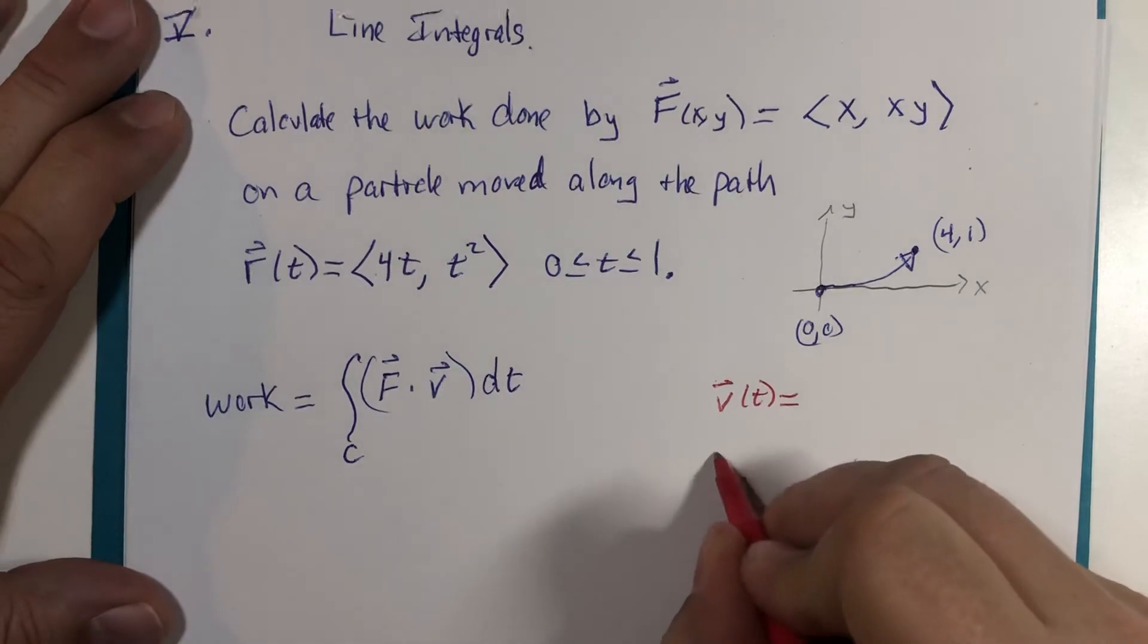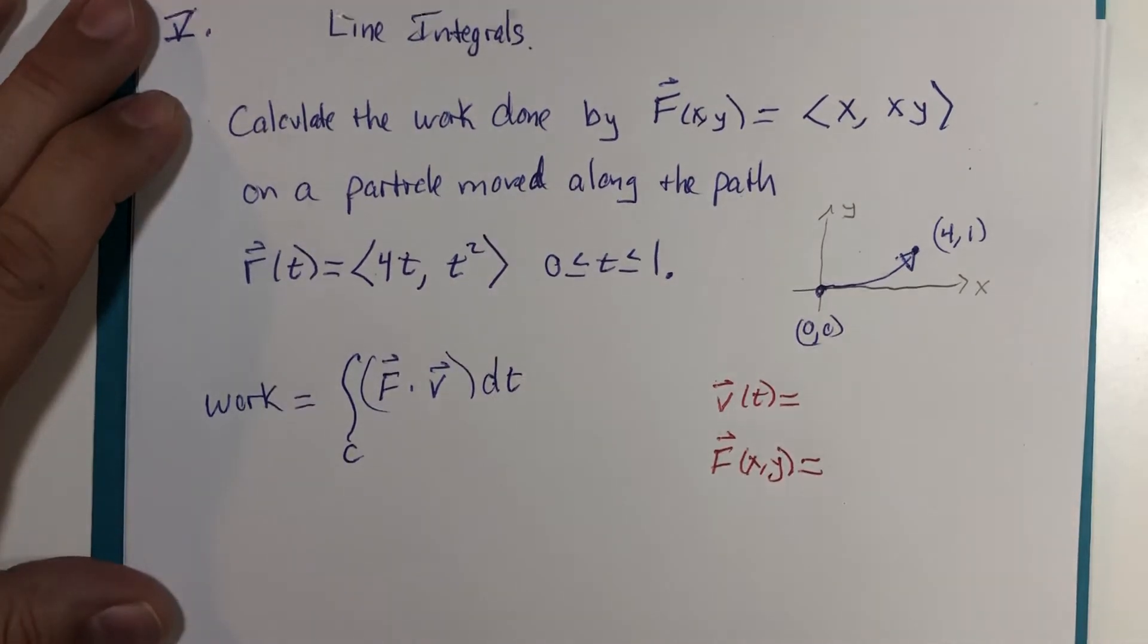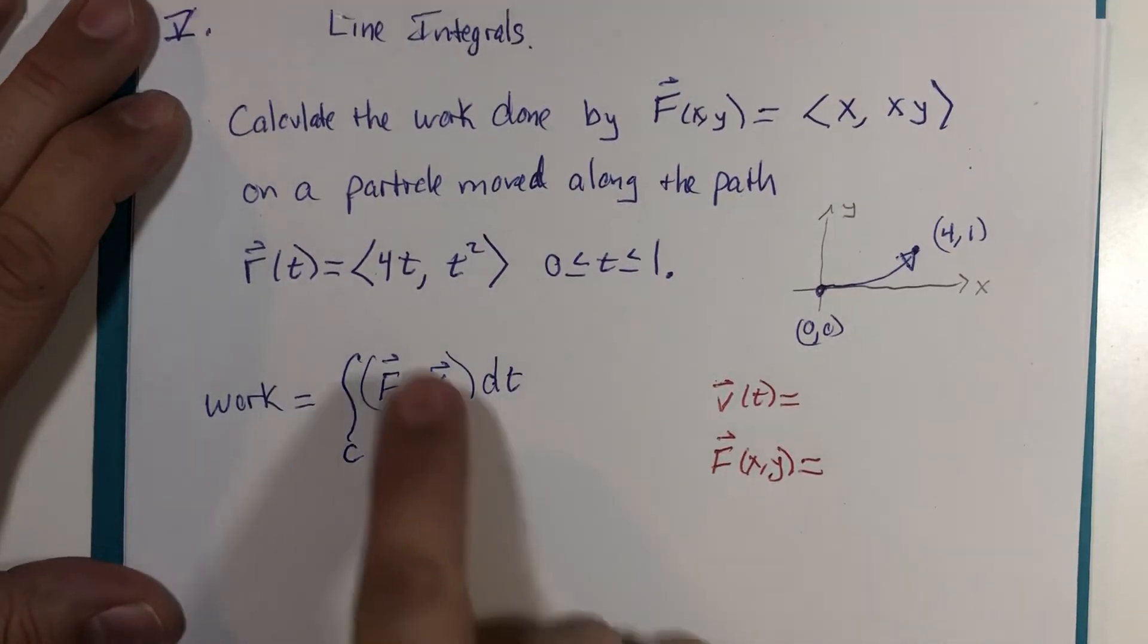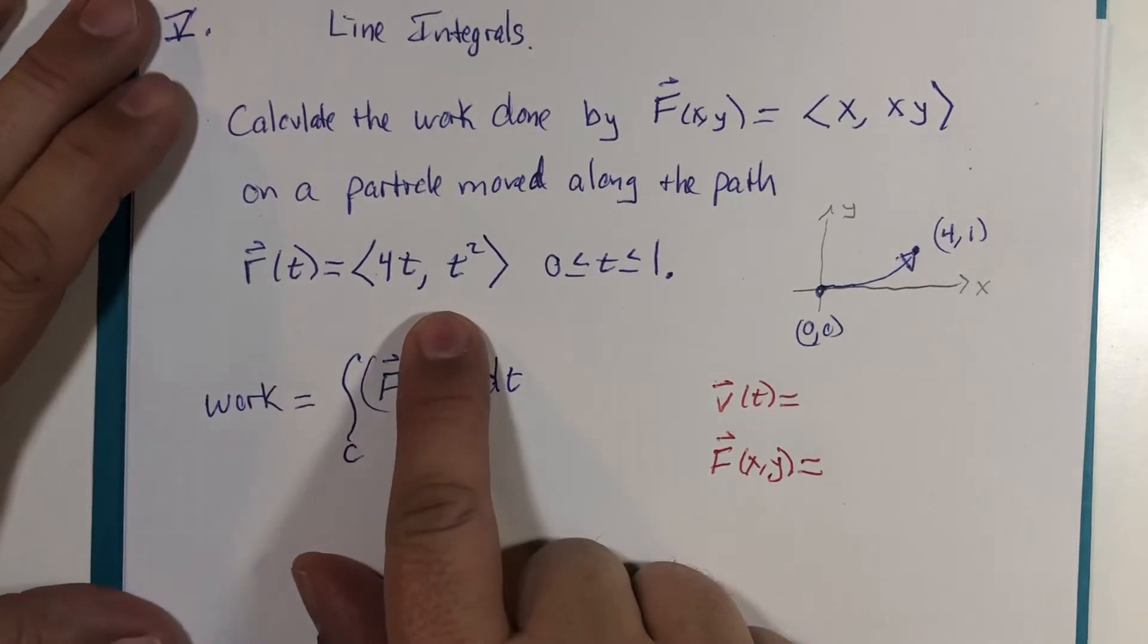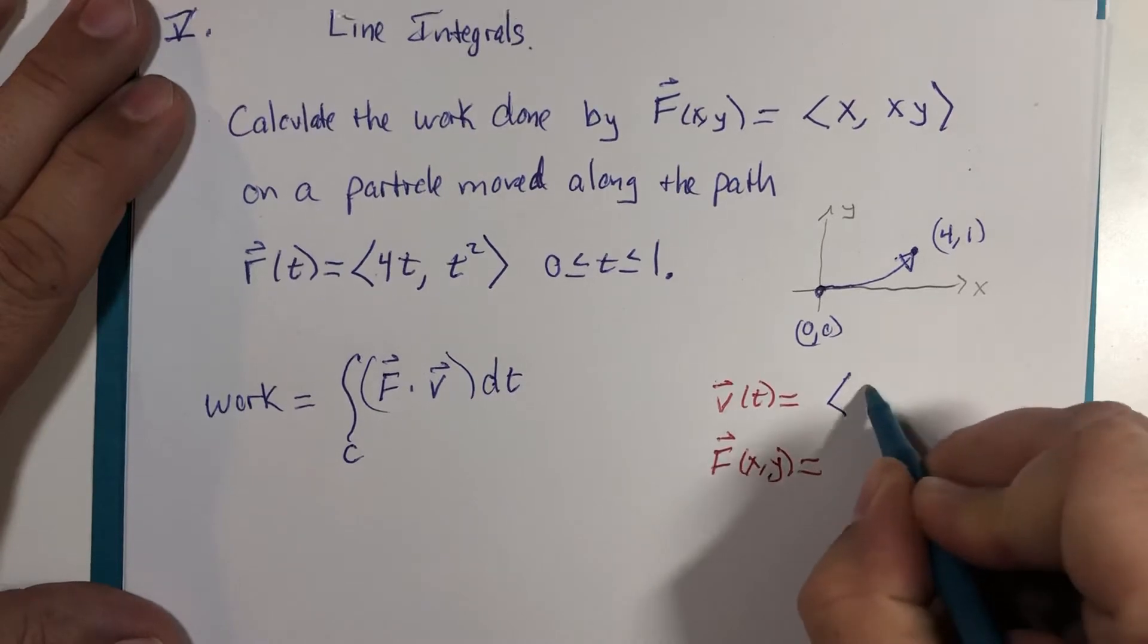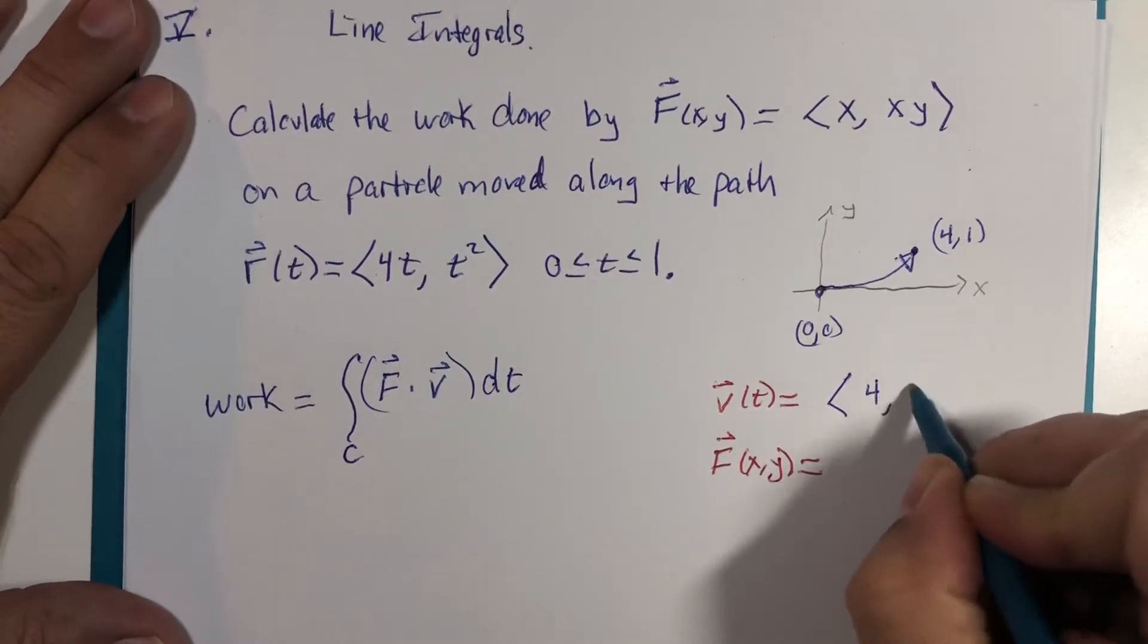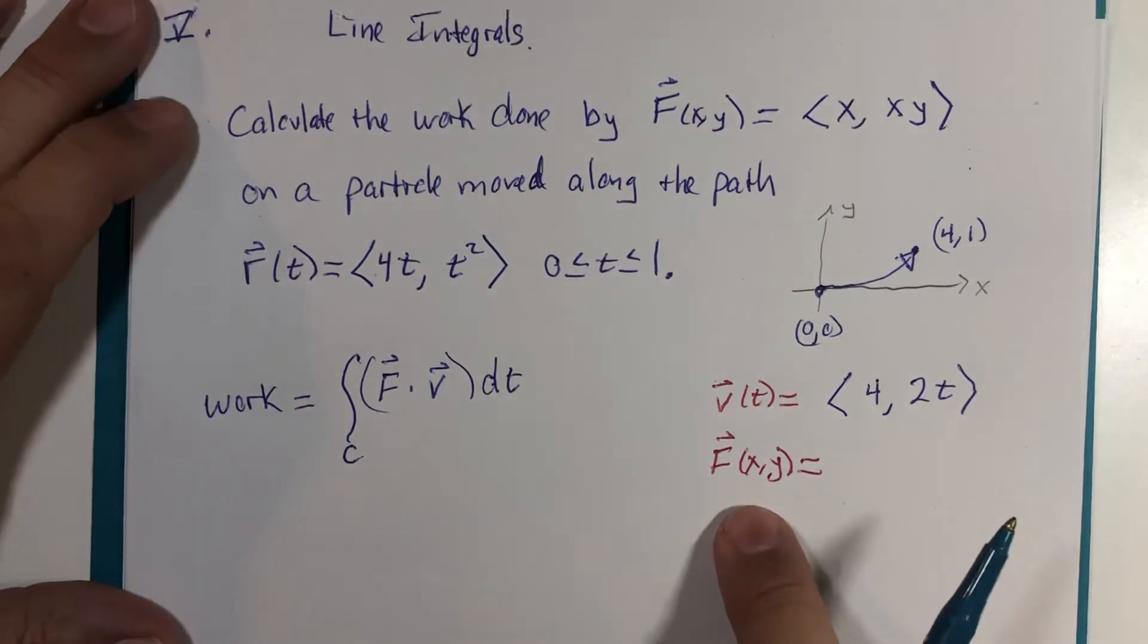We also need the vector field in terms of t, not x and y. Well, the velocity vector is going to be the first derivative—that's right, I can hear you guys thinking it—<4, 2t>. And the vector field...